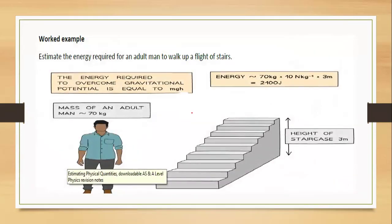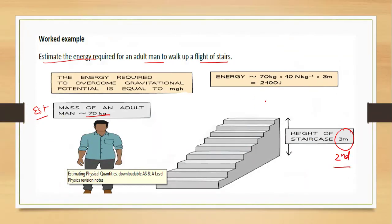Let's do a worked example. Sometimes estimations require using a formula. Estimate the energy required for an adult man to walk up a flight of stairs. We estimate the mass as 70 kg and the height of the stairs as 3 meters. Using E = mgh: 70 × 10 × 3 = 2100 joules. So the person needs to do approximately 2100 joules of work to climb the stairs.